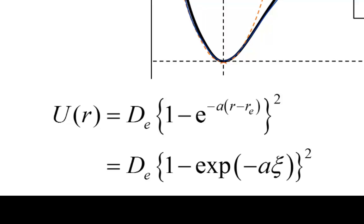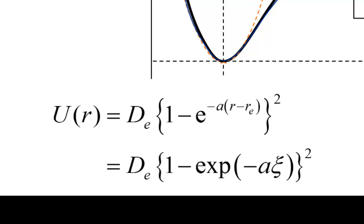How about when R is large, as it tends to infinity? When R equals infinity, R minus R sub E equals infinity, so the exponential term is zero, the term in brackets is equal to one, and so the potential equals D sub E — the dissociation energy from the equilibrium position, just as we wanted. At values of R less than R sub E, the potential increases exponentially, which is an improvement over the harmonic oscillator. So the Morse potential has the properties we were looking for.